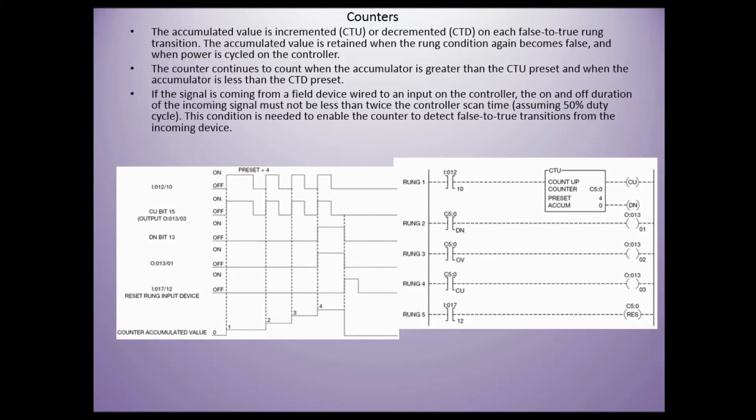The cumulative value is incremented on the CTU or decremented on the CTD on a false to true rung transition. Whatever the logic is in front of that counter has to go from true to false in order to count one up. If it just stayed true the whole time, it wouldn't keep counting like a timer would. You have to see that false transition happen.